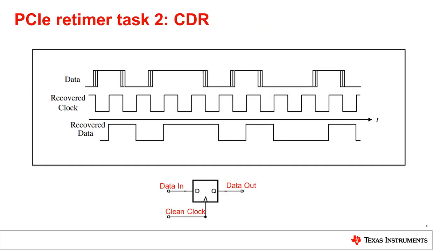The second task a retimer performs is data recovery. Data recovery is the process of sampling an input data stream at ideal locations within each data bit, and then retransmitting that data with a very low jitter clock at the same average frequency. In its simplest and most common form, data recovery is just a flip-flop that's been gated with a clean recovered clock, as we can see using the diagram at the bottom. Data recovery is necessary to eliminate jitter and amplitude degradation in the incoming data stream, and then retransmit it. In theory, this process can allow for retransmission of data almost indefinitely.